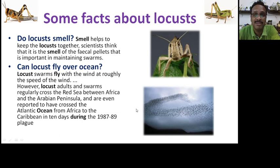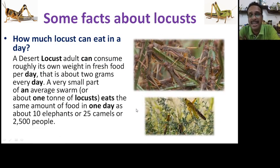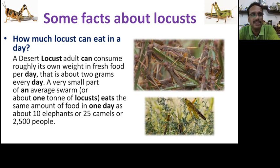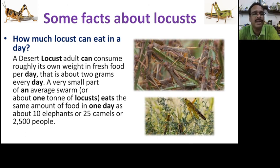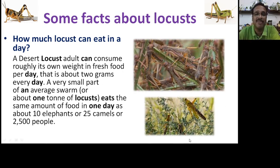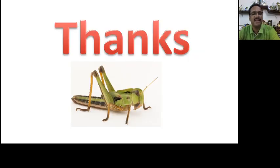How much can a locust eat in a day? As mentioned, the number of locusts in one square kilometer can eat the food of 30,000 people. A desert locust adult can consume roughly its own weight in fresh food per day — about two grams. One ton of locusts eats the same amount of food in one day as 10 elephants, 25 camels, or 2,500 people. Thank you friends, that's a different presentation from my side — hope you enjoyed this.